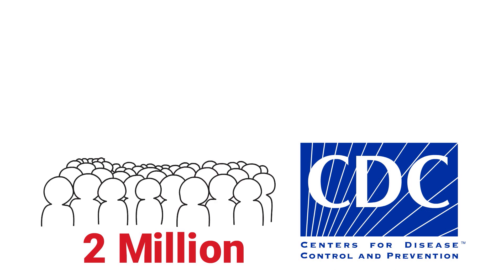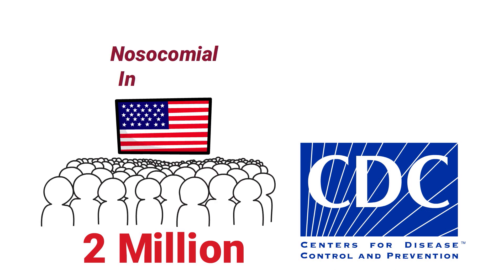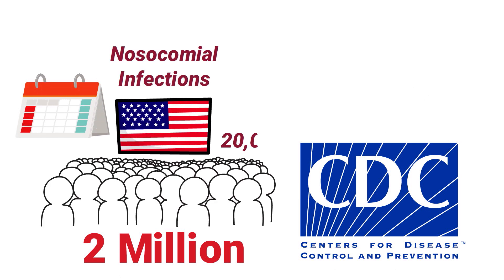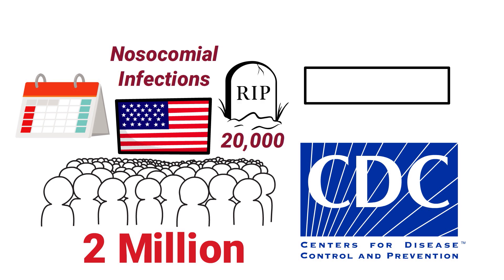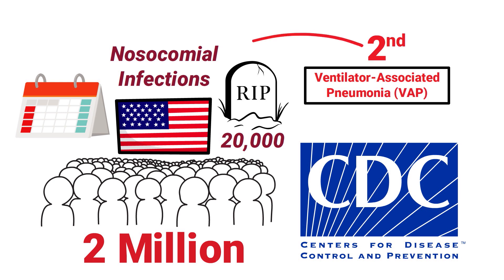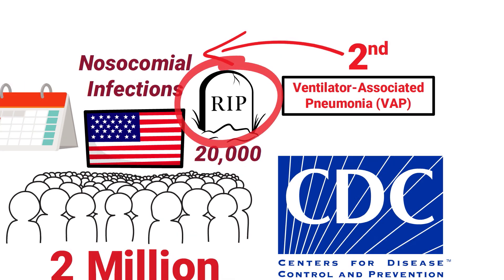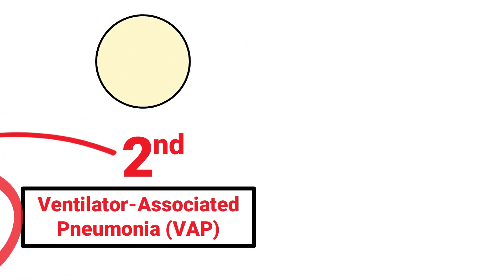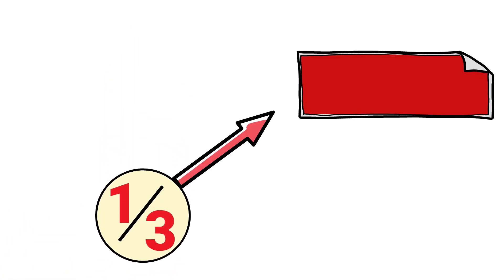According to the CDC, around 2 million people in the United States acquire nosocomial infections each year, which leads to approximately 20,000 deaths. Unfortunately, ventilator-associated pneumonia is the second most prevalent type of nosocomial infection but attributes to the most mortalities. About one-third of all VAP cases could be prevented by using the following strategies.